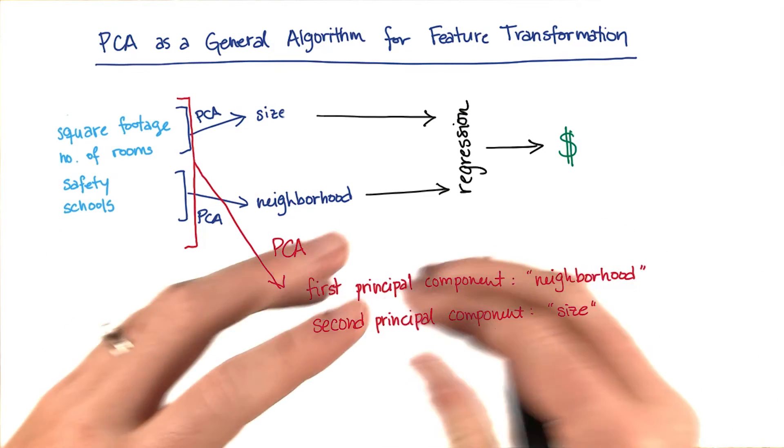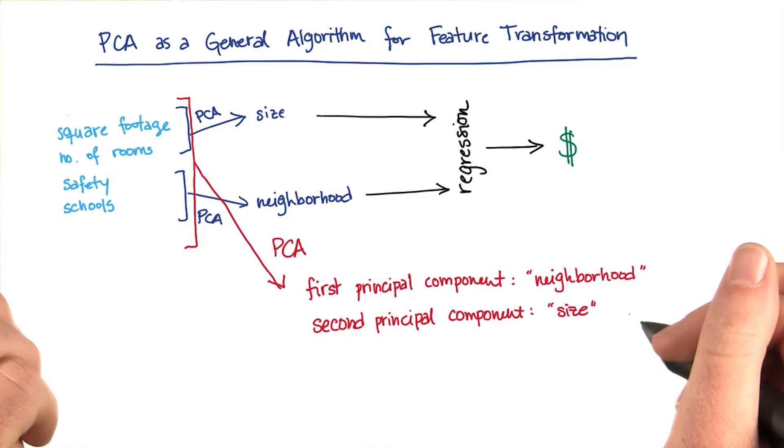The first principal component, the one that has the most effect, might be something like neighborhood. And the second principal component might be something like size.